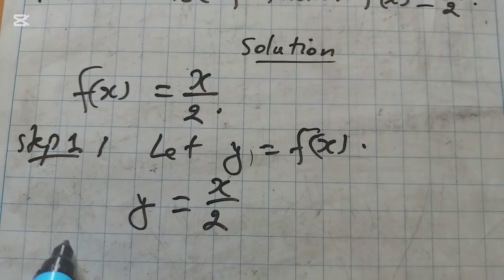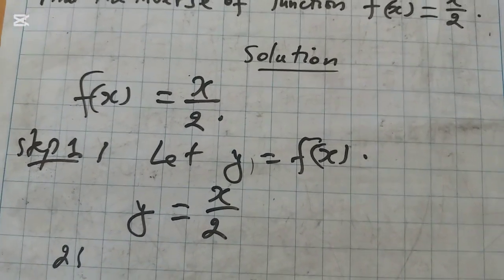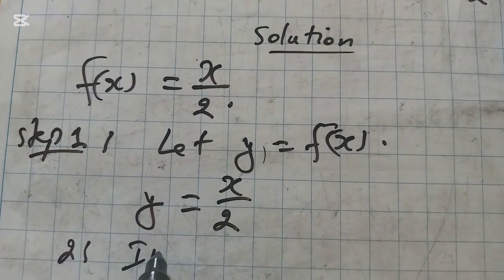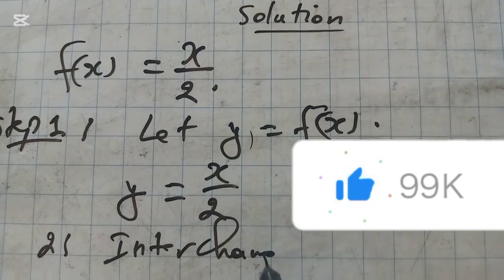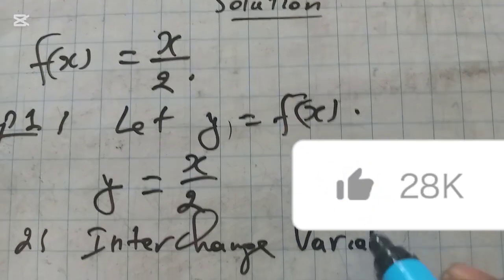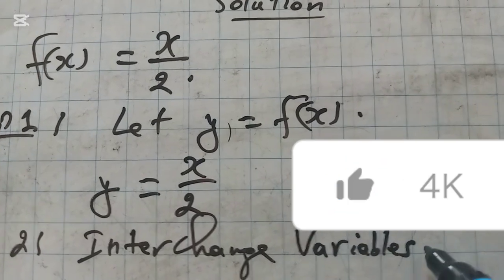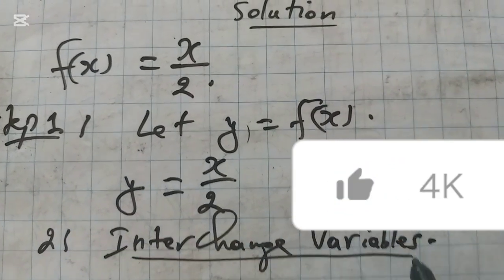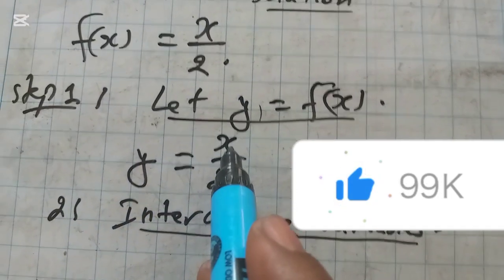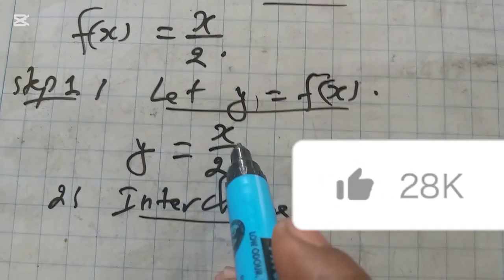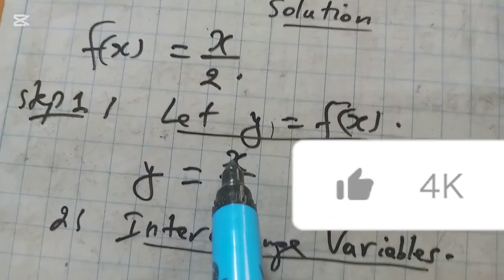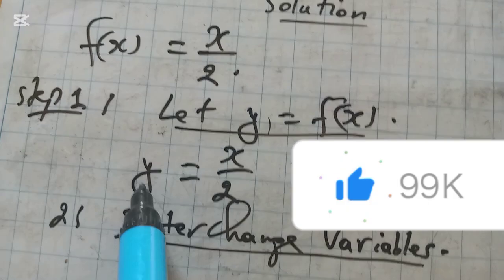Step number 2 is to interchange variables. We are going to interchange variables. When we interchange variables, we are going to make x become y and make y become x. Write y in place of x and write x in place of this y. So we get x equals y over 2.